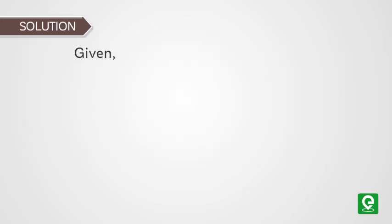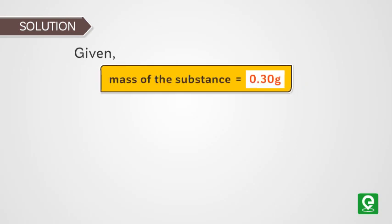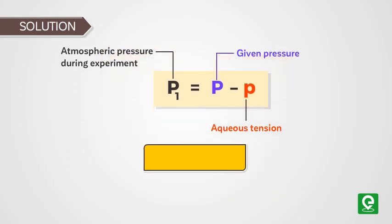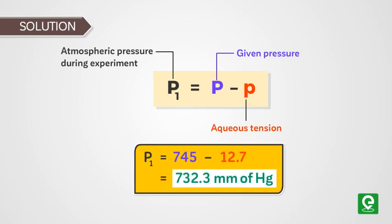We are given an organic compound of mass 0.30 gram. Atmospheric pressure during experiment equals given pressure minus aqueous tension, that is P1 = 745 - 12.7 = 732.3 mm of Hg.